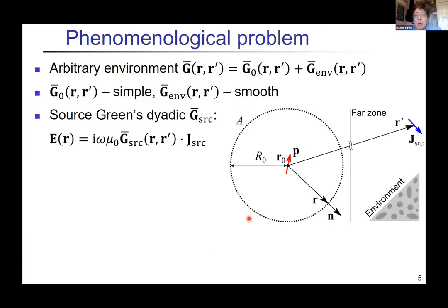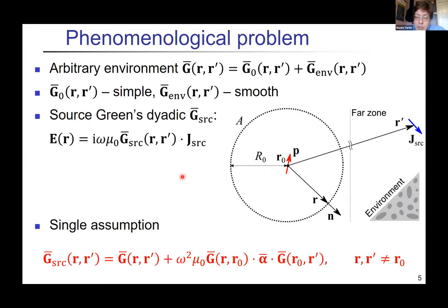First we discuss the phenomenological model. We start with the Green's dyadic, which is a contribution from free space and also some environment possibly. We also use the source Green's dyadic—that's exactly the one the previous speaker was using. That connects arbitrary current placed in one space to the field in another point which is induced both by environment and also by the dipole itself. We show that for a point dipole you need only a single assumption to describe it phenomenologically.